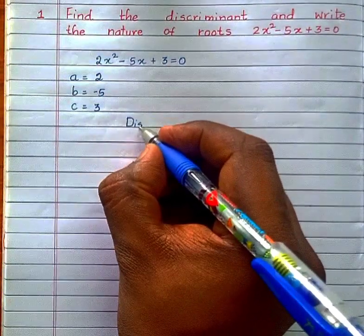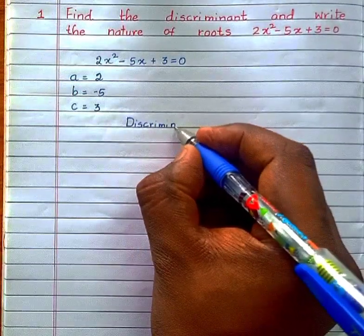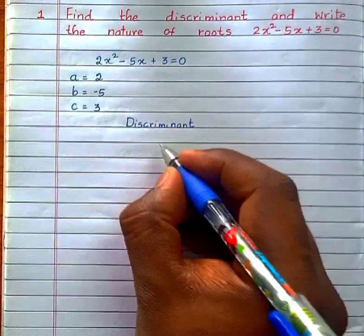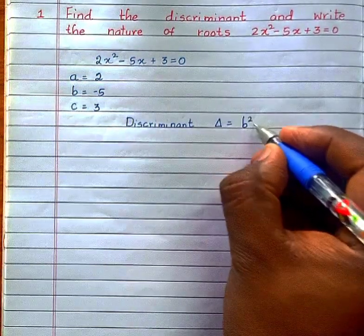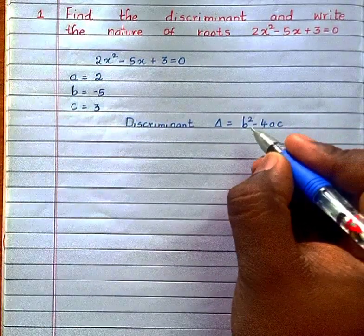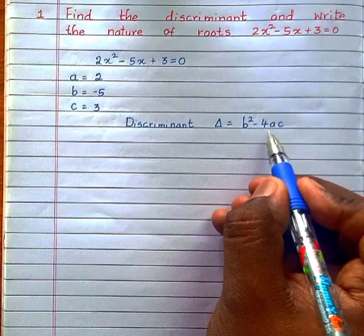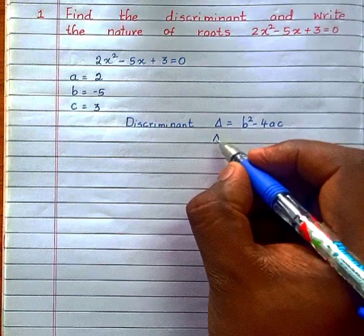Now, discriminant of the quadratic equation is given by Δ or capital D = b² - 4ac. Repeat with me, discriminant Δ or capital D = b² - 4ac.